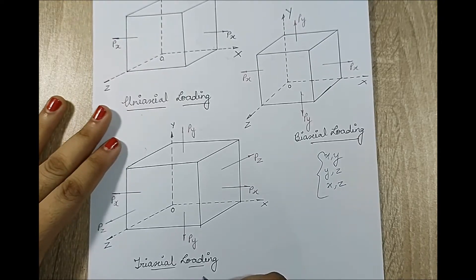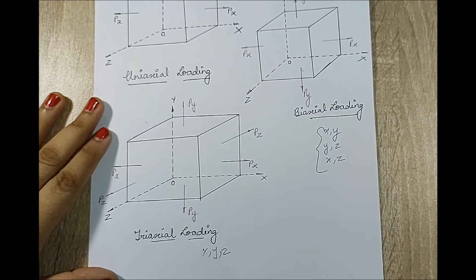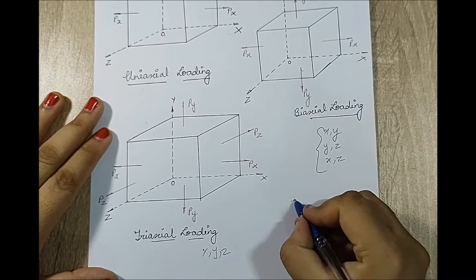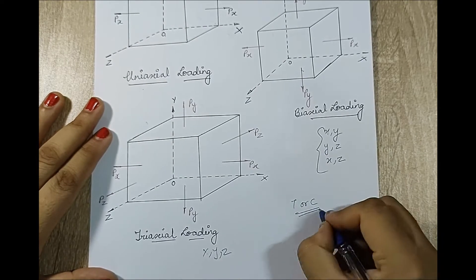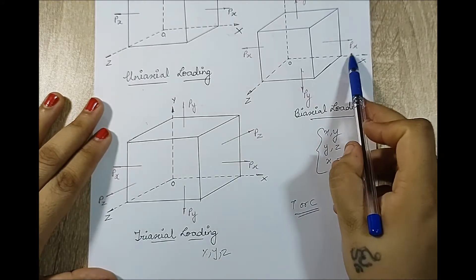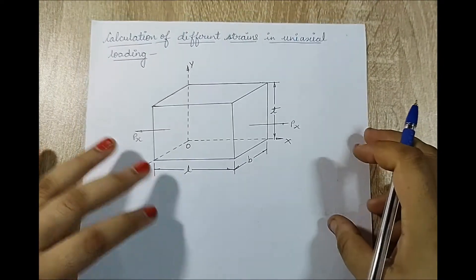Suppose you have the load applied along all axes x, y and z — then it will be called triaxial loading, as you can see here. One important thing: I have shown tensile loading everywhere, but it could be either tensile or compressive. It does not make a difference except that the load will be of negative type for compressive load.